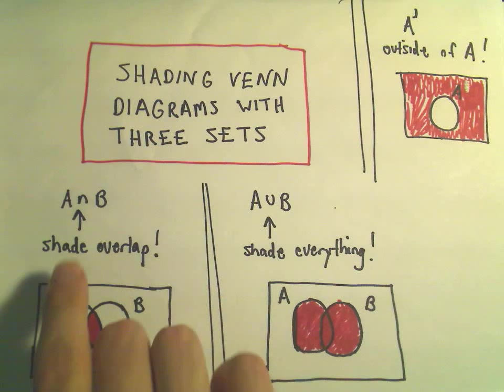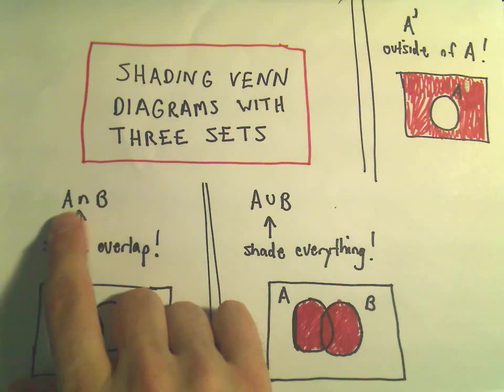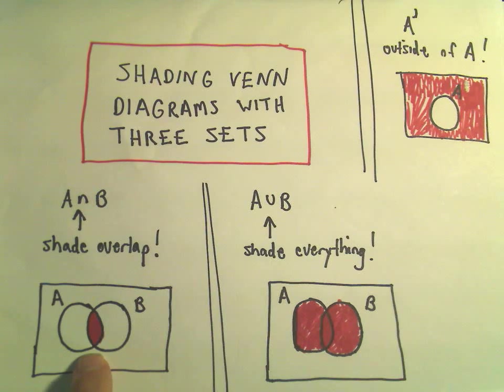But just as a little reminder, remember if you do the intersection of two sets, what you do is you simply shade the overlap of those two regions. So here I've just shaded the part that's in the region that's in both circles A and B.